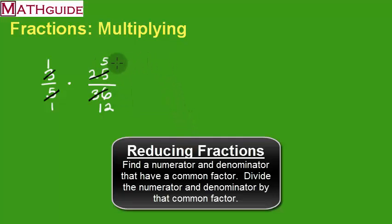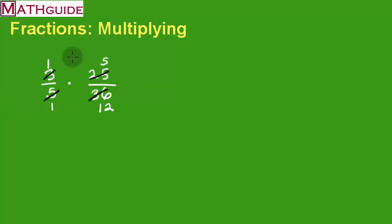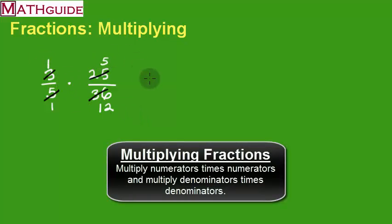All right, now let's see if these have something in common. Nope, they do not. So when I'm done reducing, and it looks like I'm done, there's no other reducing I could do with a numerator-denominator combo. I now multiply straight across. So 1 times 5 is 5. And then 1 times 12 is 12. And there you go. There's the final answer.